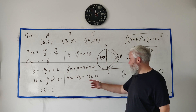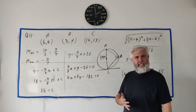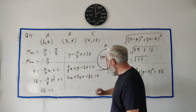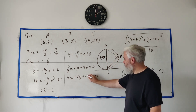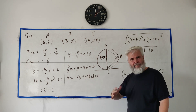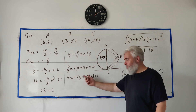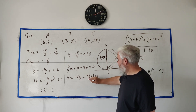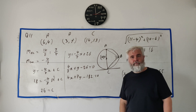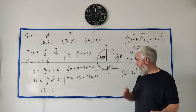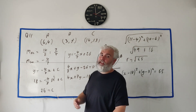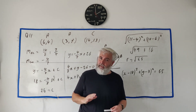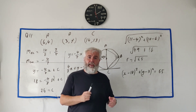A note for students: don't panic when you get a minus constant like minus 182 — that's fine, it still fits the required form dx plus ey plus f equals zero. So 4x plus 7y minus 182 is the final answer for part C. That answers question 11 — if you have any questions about this paper or this question, let me know. Thanks for watching, have a great day.